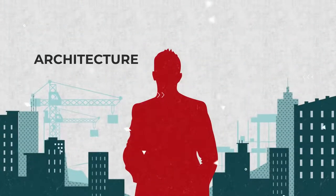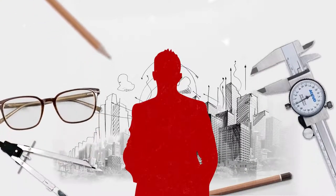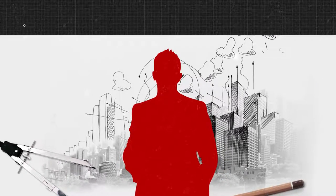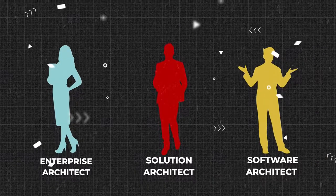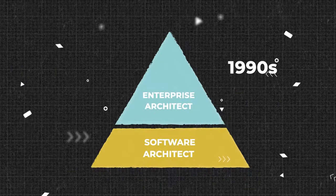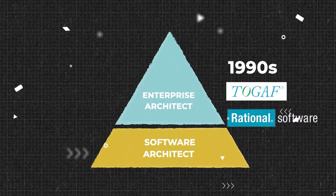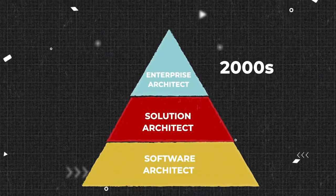The term architecture was borrowed from the construction industry to highlight the complexity of problems — these were enterprise systems after all. The term also depicts a vantage point: architects oversee the big picture without diving into low-level technical details. Today, we know three main roles related to architecture: enterprise, solution, and software architects. Solution architects weren't initially recognized either in enterprise architecture frameworks like TOGAF or in software development ones like Rational. But sometime in the mid-2000s, the role emerged as a middle ground between a wide enterprise perspective and a narrow tech perspective.